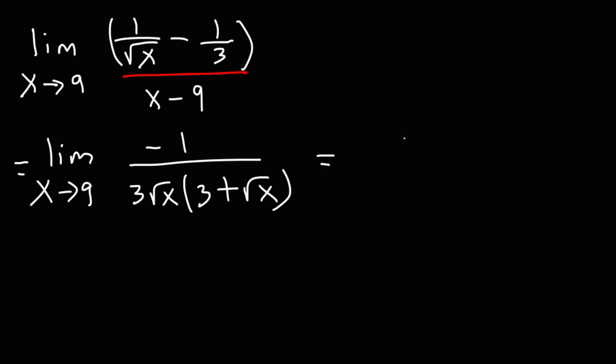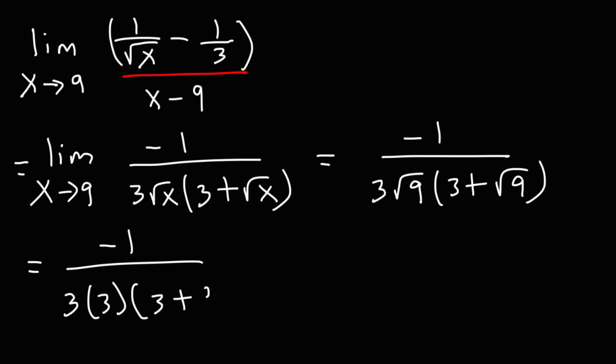So this is going to be negative 1 over 3 square root 9 times 3 plus the square root of 9. The square root of 9 is 3. And 3 times 3 is 9, 3 plus 3 is 6, 9 times 6 is 54. So the answer for this problem is negative 1 over 54.